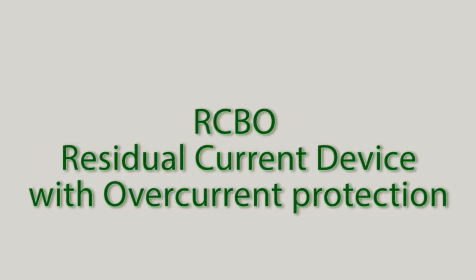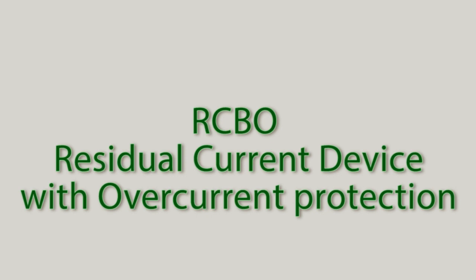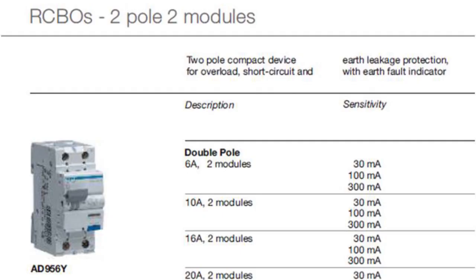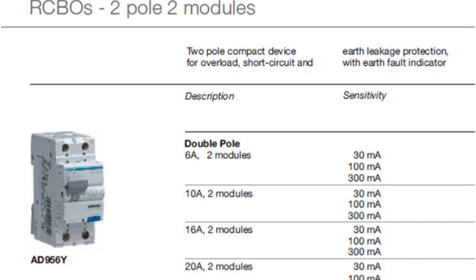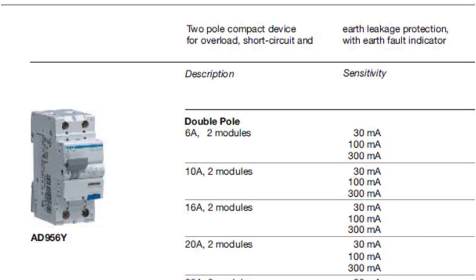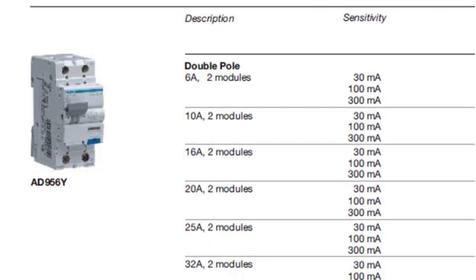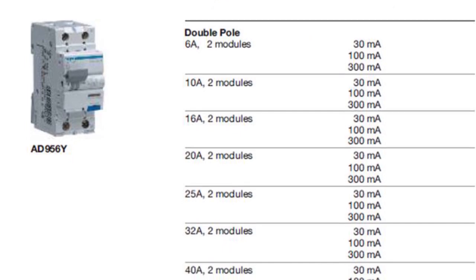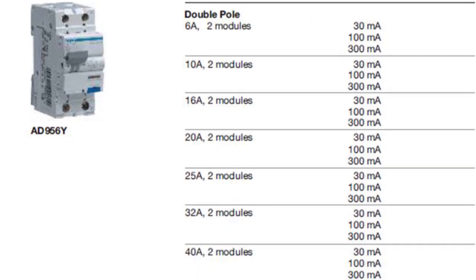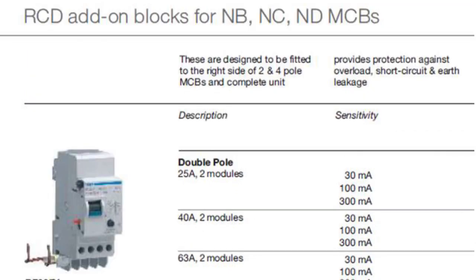RCBO — Residual Current Device with Overcurrent Protection — is a device which offers protection against earth leakage as well as overcurrent. By overcurrent we mean overload and short circuit protection. RCBO can be understood as a combination of MCB and RCCB, because MCB provides protection against overload and short circuit whereas RCCB provides protection against earth leakage.